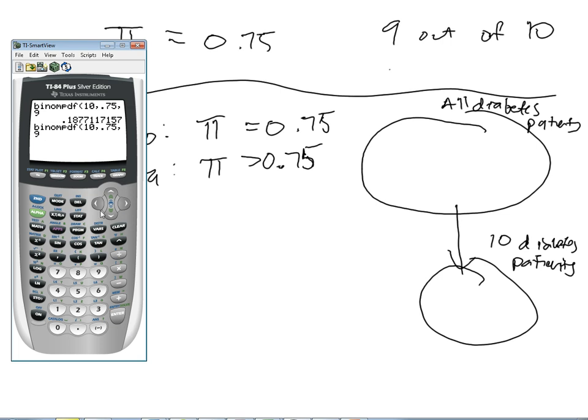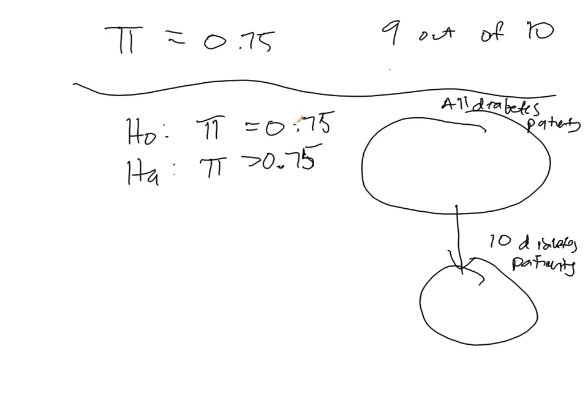What about 10 out of 10? How likely is it that I'd see all 10 out of 10 patients cured if there's a 75% success rate? Well, that would be 5.6%. Okay, so that means that the probability that X is...